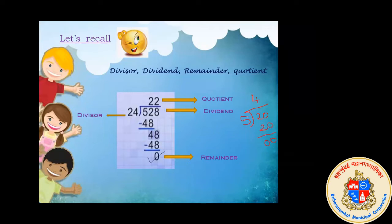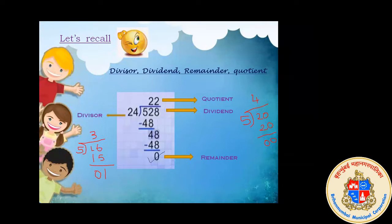Now we will see one more division sum. If I take 20 divided by 5, what will I get as the quotient? The answer is 4. 5 fours are 20, and I get the remainder as zero. So I can say 20 is completely divided by 5. But in a similar case, if I take 16 divided by 5, I get a remainder of 1, not zero. So here I can say 16 is not completely divided by 5.